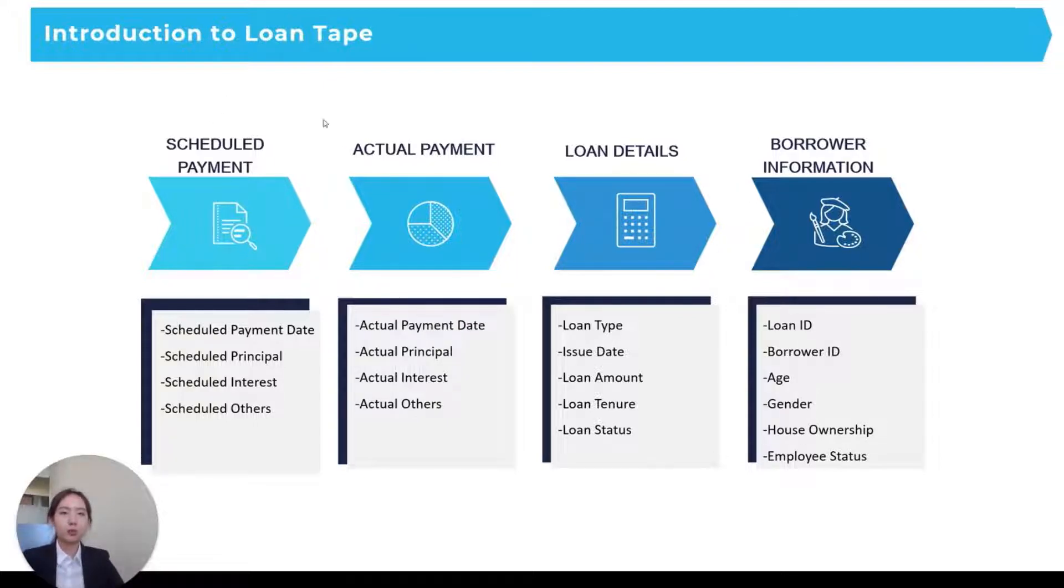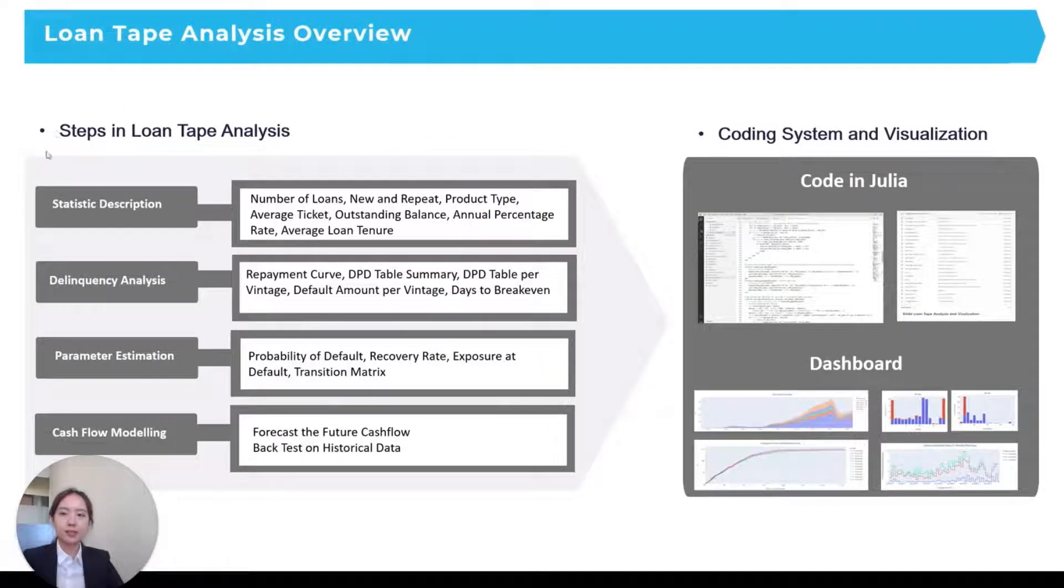These are the data we usually request from the loan originator. As you can see, there are four steps in doing the loan-tape analysis and we can get all this information.